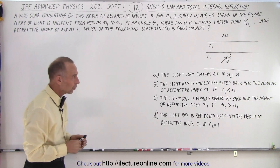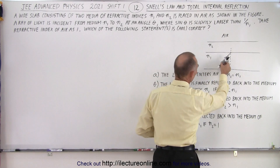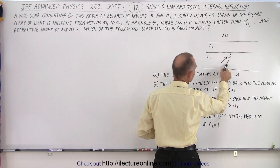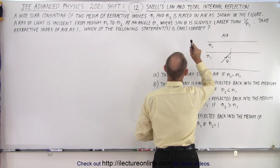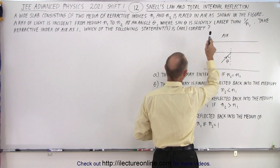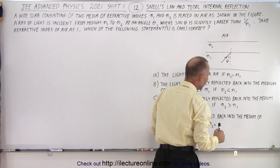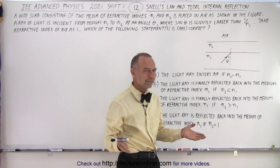Notice that we have an incident ray from N1 to N2 at an angle of theta. They tell us that sine of theta is larger than 1 over N1. What does that mean?